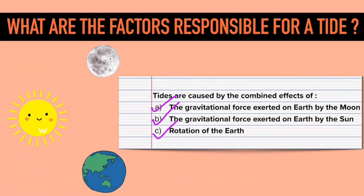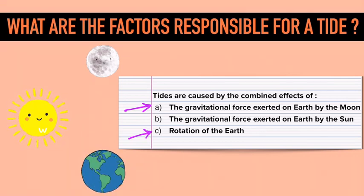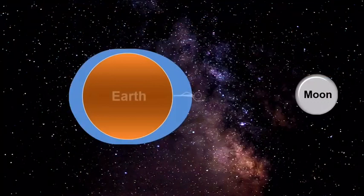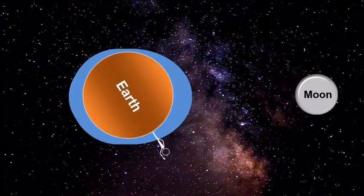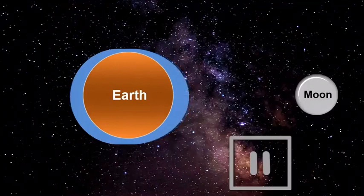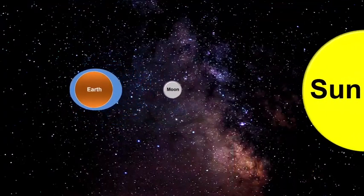In the previous video we discussed how the moon's gravity and earth's rotation were responsible for creating tides. We saw how due to moon's gravity two high tides and two low tides are created. But a big object is missing in our diagram — if we zoom out, we can now see that there is also the sun in the picture.